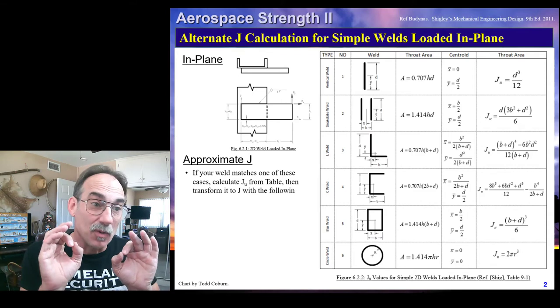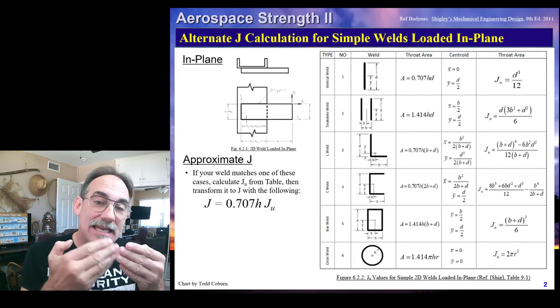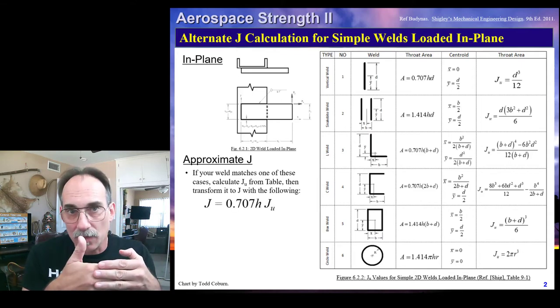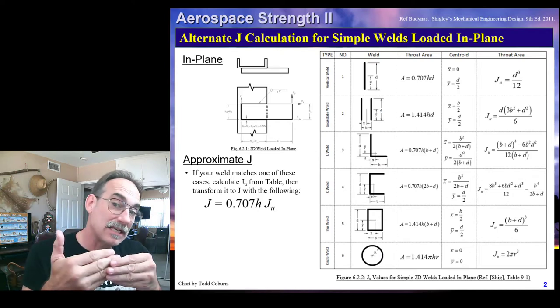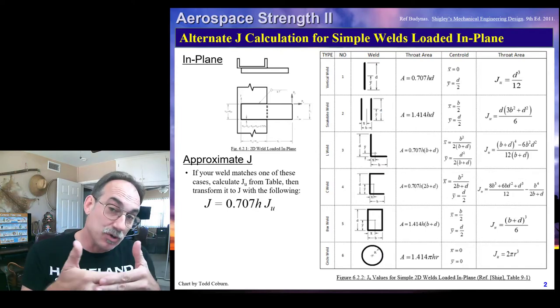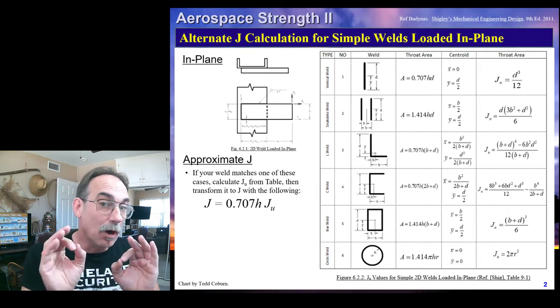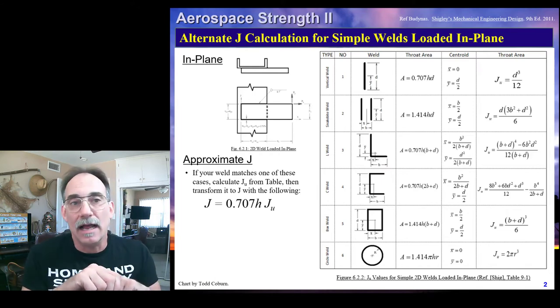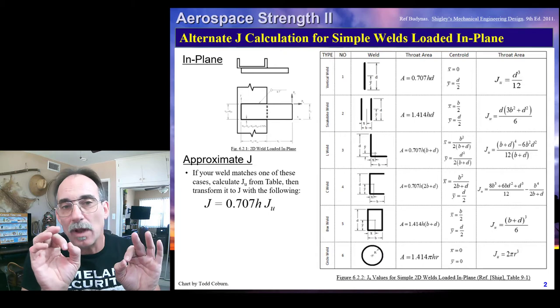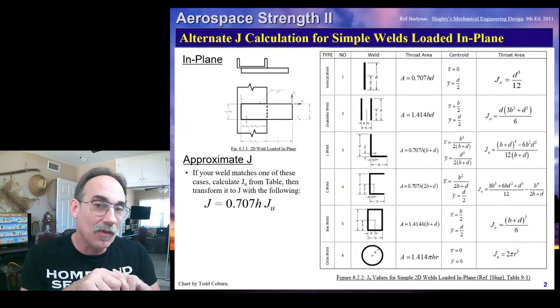What we saw last lecture was how to calculate the detailed properties of the weld: the area, the x-bar and y-bar, and the torsional resistance J. That is the most straightforward and consistent way of solving any weld that we might encounter.